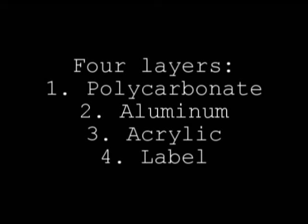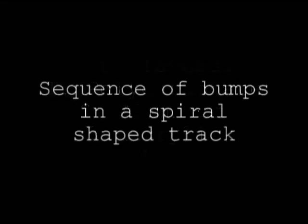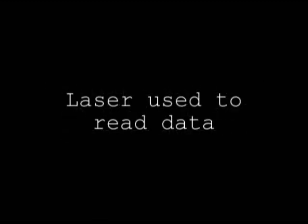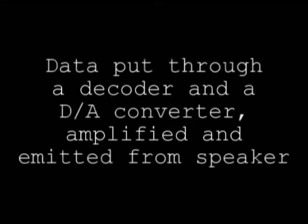Let's review. The compact disc is composed of four layers: the polycarbonate layer, aluminium layer, acrylic layer, and label. Data is stored on a sequence of bumps arranged in a spiral-shaped track. Sound, which is an analog signal, must be converted to digital data. This data is formatted to prevent reading errors and corruption. A laser is used to read the data on a compact disc. The data read by the laser is run through a decoder, converted to an analog signal in a digital-to-analog converter, amplified, and finally put through a speaker. It's not science — it's magic.